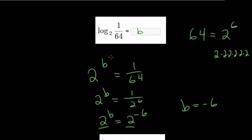So if you raise 2 to the negative 6 power, that just means divide by 2 six times. And dividing by 2 six times is the same as dividing by 64. So we put negative 6 up in our box here.